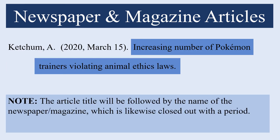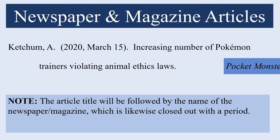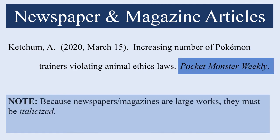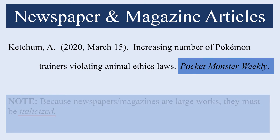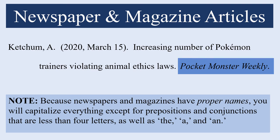The article title will be followed by the name of the newspaper or magazine, which will likewise be closed out with a period. Because newspapers and magazines are considered larger works, as they contain smaller works, they will be italicized while the article titles will not be. In addition, because newspapers and magazines have proper names, you will use proper name capitalization — meaning you capitalize everything except prepositions and conjunctions with less than four letters, as well as the words the, a, and an.